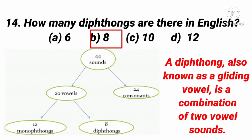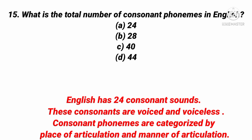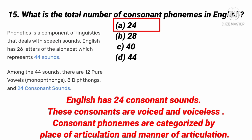Remember: sounds, consonants, vowels, monophthongs, and diphthongs. The next question: What is the total number of consonant phonemes in English? The right answer is 24. English has 24 consonant sounds, which include both voiced and voiceless consonants.